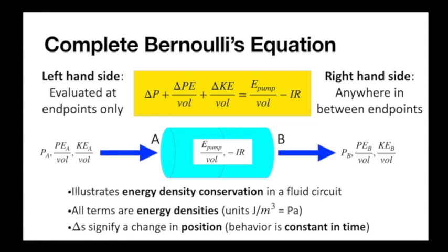This is where we left off last time with our complete Bernoulli's equation. We need to pick a start and an end point — each term is a delta, and we only care about the value at our start and end points, or really the difference, final minus initial. The pump and resistance or thermal dissipation occurs anywhere in between the final and initial points we picked. If the pump is just before our initial or the resistance is just after our final, it doesn't count.